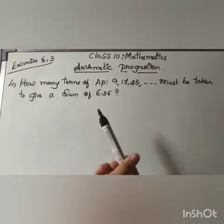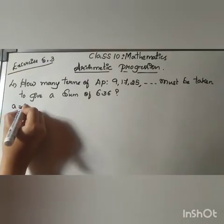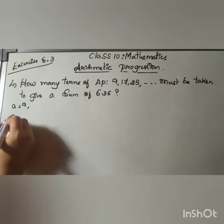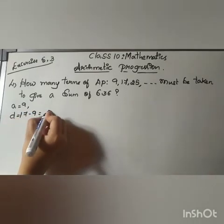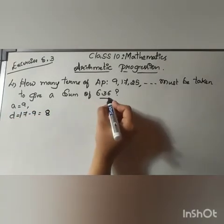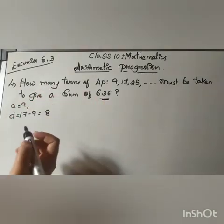According to the question, the value of a is 9. So d equals 17 minus 9, that is 8. And the sum they have given, that is the sum of the given arithmetic progression, is 636.